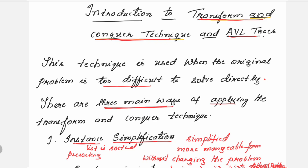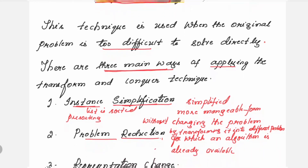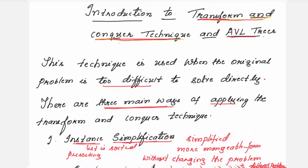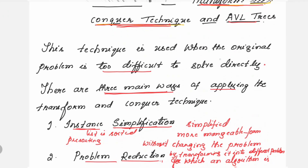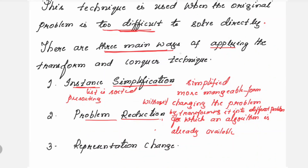When is this transform and conquer technique used? As you have already learned previous methodologies or approaches to solve different problems like the greedy approach, the divide and conquer approach, the brute force approach — there is another approach called the transform and conquer technique. This technique is used when the original problem is too difficult to solve directly. There are three ways of applying this transform technique.